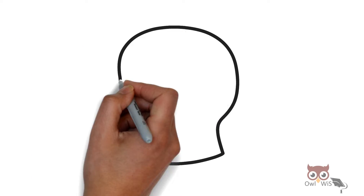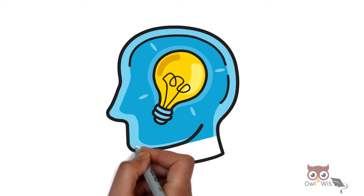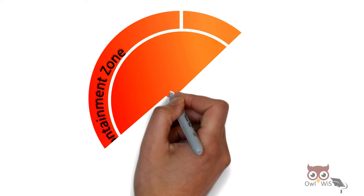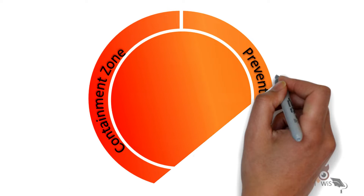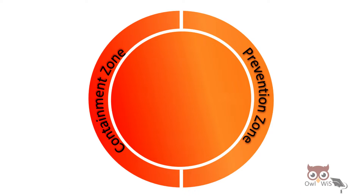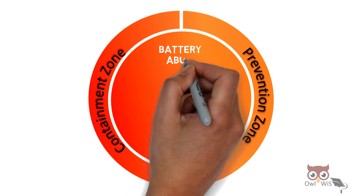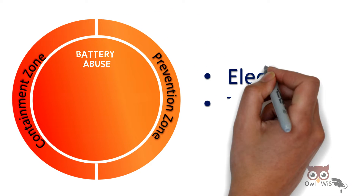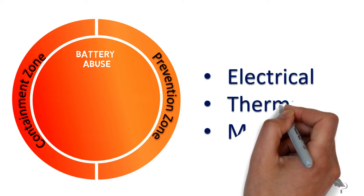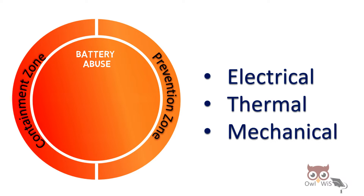Let us understand this process in detail. The entire process is divided into two zones: the prevention zone and the containment zone. It starts with battery abuse, which can be due to electrical, thermal, or mechanical abuse, which results in cell damage.